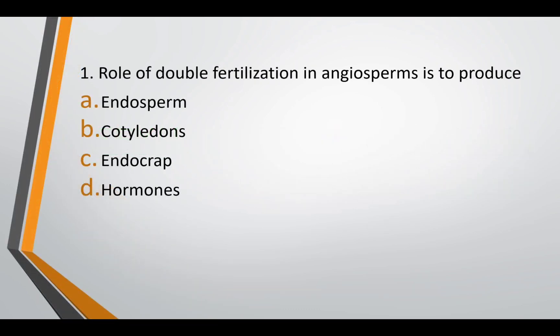Question number one: role of double fertilization in angiosperms is to produce — option A: endosperm, option B: cotyledons, option C: endocarp, or option D: hormones. The correct answer is option A — it produces endosperm.